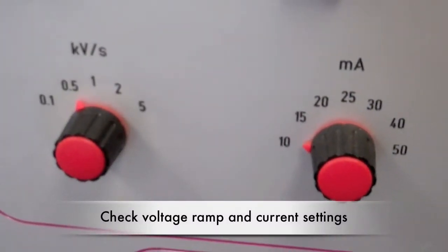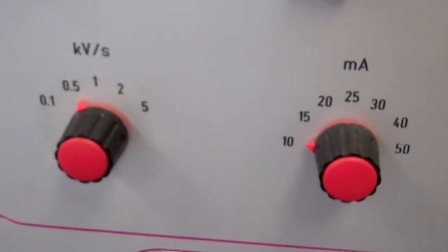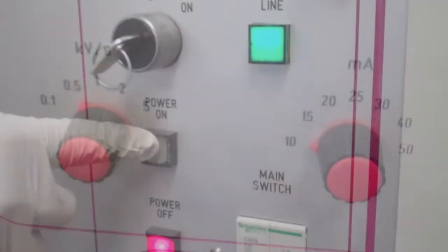Make sure the voltage ramp is set to 0.5 kilovolts per second and the current to 10 milliamps. These settings may be different depending on your specific test.